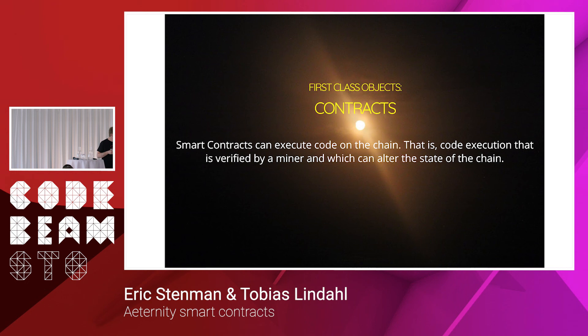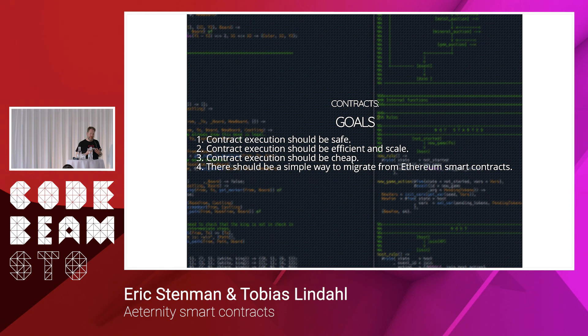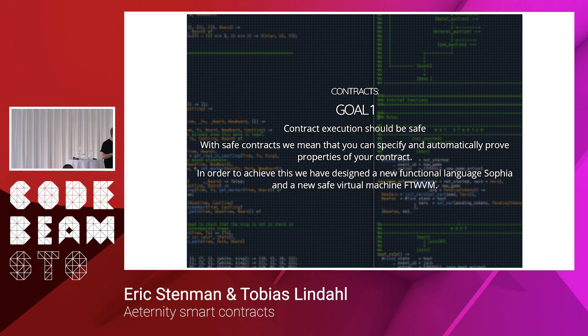And to bring it all together, we have smart contracts. Some people say they are not smart and they're not contracts — that sums it up well. It's actually just code that you can execute on the chain. We had a number of goals when designing smart contracts for Eternity: they should be safe, efficient, scalable, and execution should be cheap. There should also be a simple way to migrate from previous smart contracts like Ethereum. Unfortunately, these four goals are not really compatible.